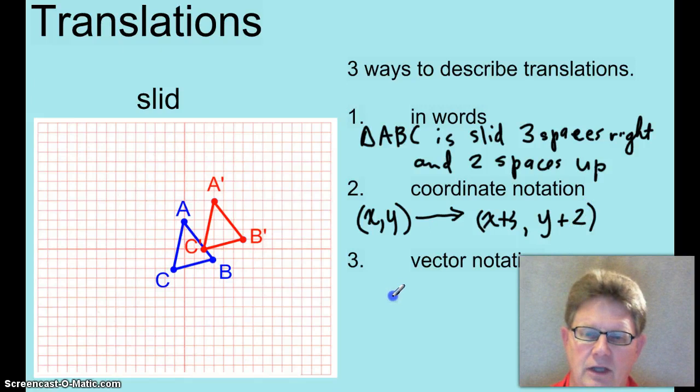And then in vector notation, we're going to use what are called hard parentheses, and we're just going to write the movement: 3, 2. And that's the vector notation of a translation.